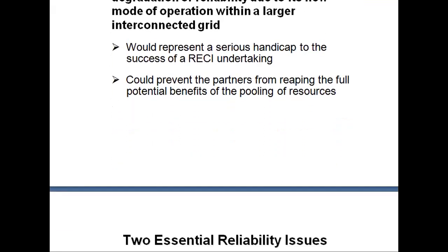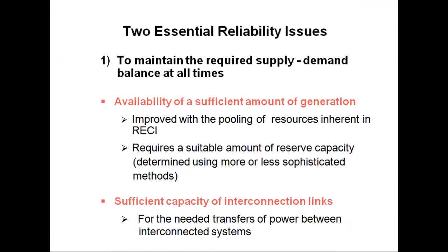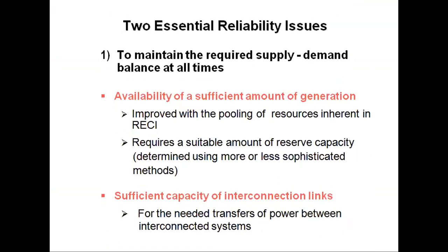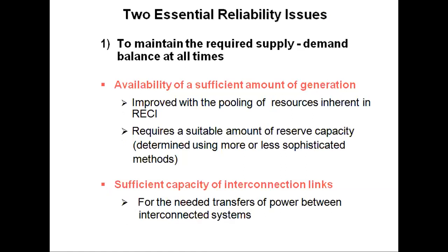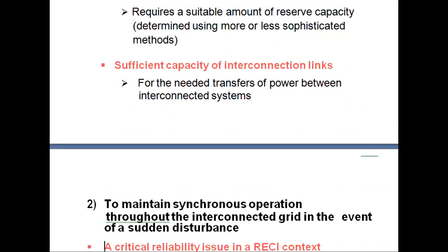Considering an increase in global future energy demand and expected increasing shares of electricity in final energy consumption from below 20% today to between 23% and 27% by the end of 2040, we have to provide continuous reliability. There are mainly two essential reliability issues. The first is to maintain the required supply-demand balance at all times, meaning availability of sufficient generation improved with pooling of resources inherent in RECA, requiring a suitable amount of reserve capacity and sufficient capacity of the interconnection links.